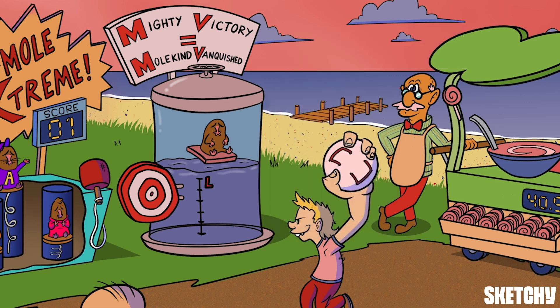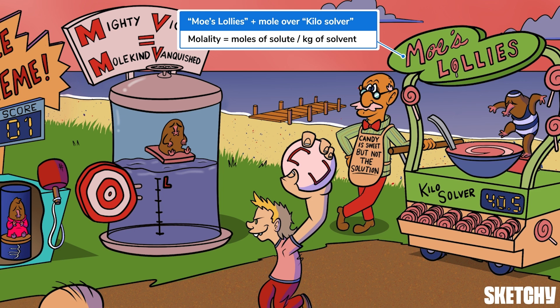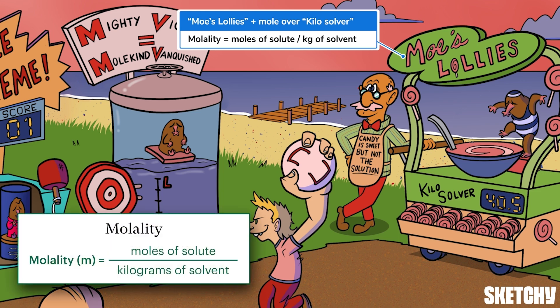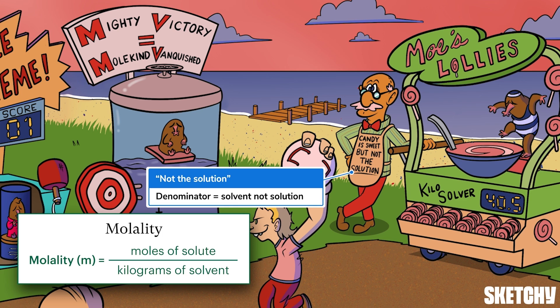Mo's lollies should trigger thoughts of molality, which is like molarity's less popular measure of concentration cousin. Molality represents the moles of solute per kilogram of solvent — that's why we can see a mole over the kilo solver scale. Mo is sporting a PSA apron to remind you that candy is sweet, but not the solution, since molality is the only measure that doesn't use the whole solution in the denominator. Molality only uses the mass of the solvent.